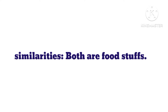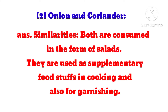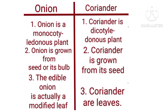Similarities: Both are foodstuffs. Onion and Coriander — Similarities: Both are consumed in the form of salads. They are used as supplementary foodstuffs in cooking and also for garnishing. Differences: 1. Onion is a monocotyledonous plant; Coriander is a dicotyledonous plant. 2. Onion is grown from seed or its bulb; Coriander is grown from its seed. 3. The edible onion is actually a modified leaf; Coriander are leaves.